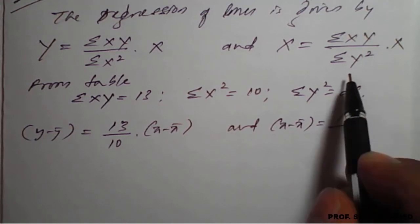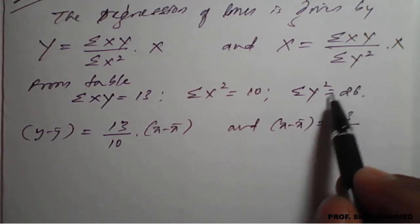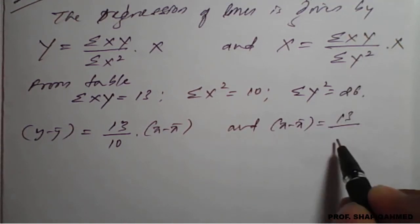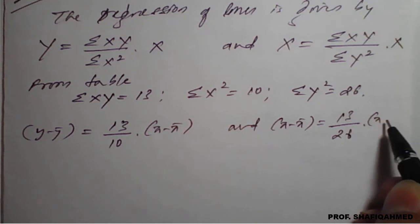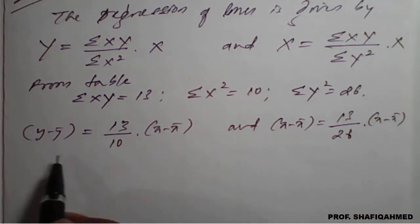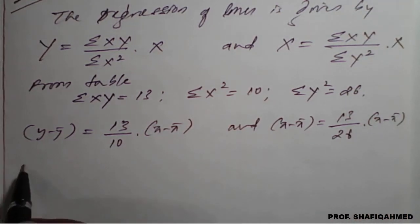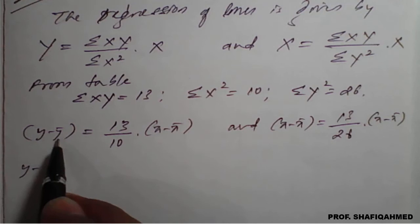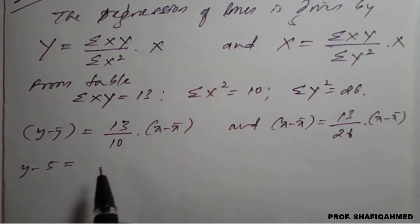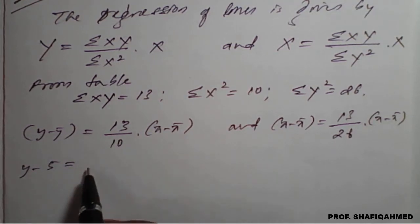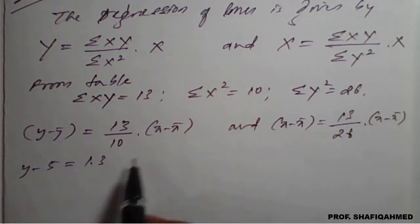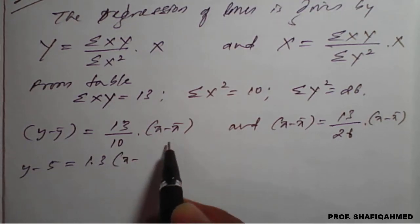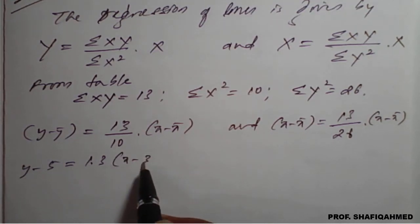Divided by 17, divided by summation of Y² which is 26. And X minus X̄ — that is Y — X minus X̄. So we will simplify first. Y minus Ȳ value is 5, equal to 13 by 10 which is 1.3. X minus X̄ is 3 here.